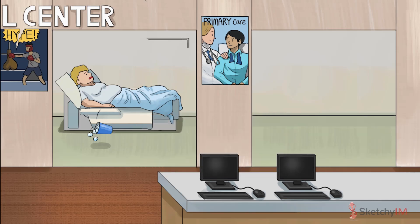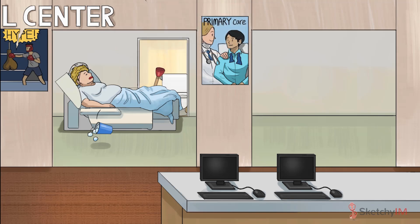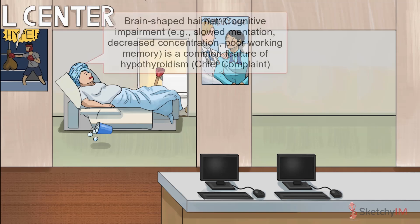Hypothyroidism also results in decreased GI motility, making constipation a common complaint — hence our recurring Sketchy symbol for constipation, the plunger in this patient's bathroom. See that eerie brain-shaped hairnet on her head? Aside from being the latest in hospital fashion, it also represents cognitive impairment, a common feature of hypothyroidism.